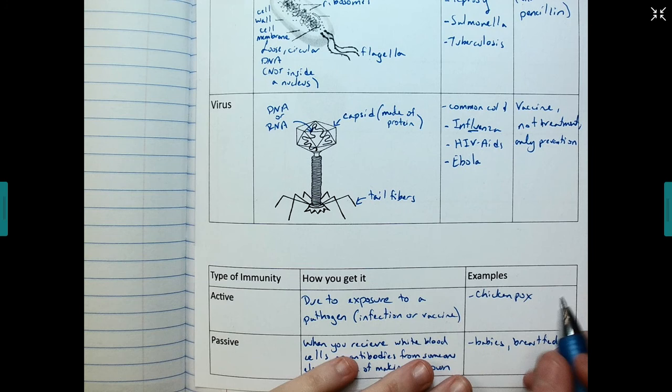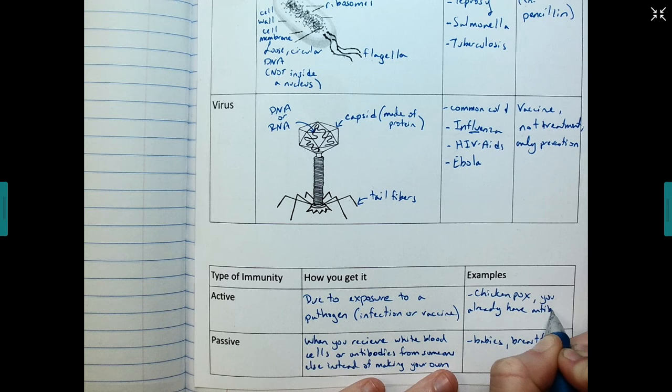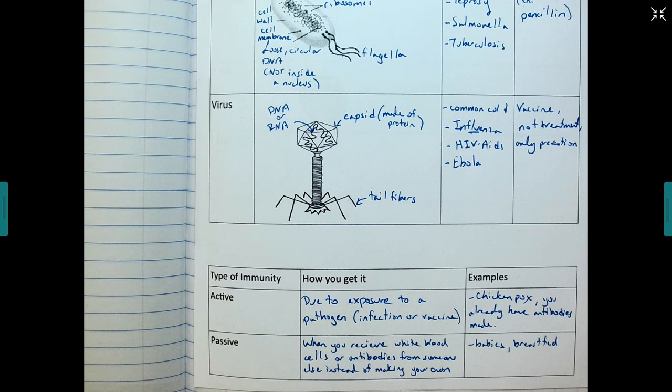So chicken pox, let's add this here. So you already have antibodies made. So you're less likely to get chicken pox because you already had it. Your body recognized, if you were to get reinfected with chicken pox, your body would recognize it because you already have the antibodies made. And you wouldn't get sick or you wouldn't get as sick as you did the first time.